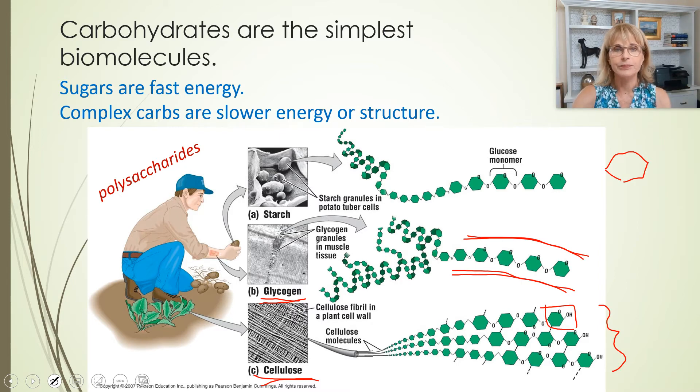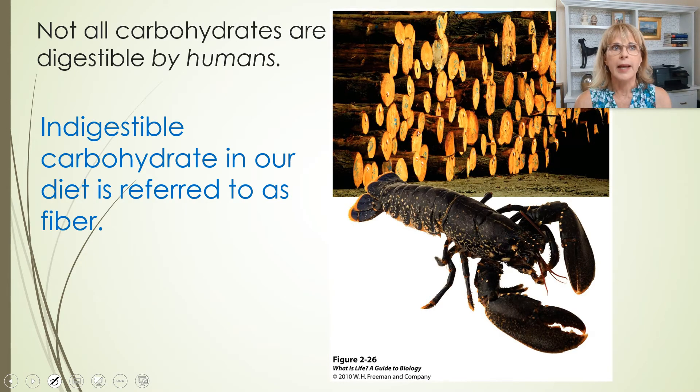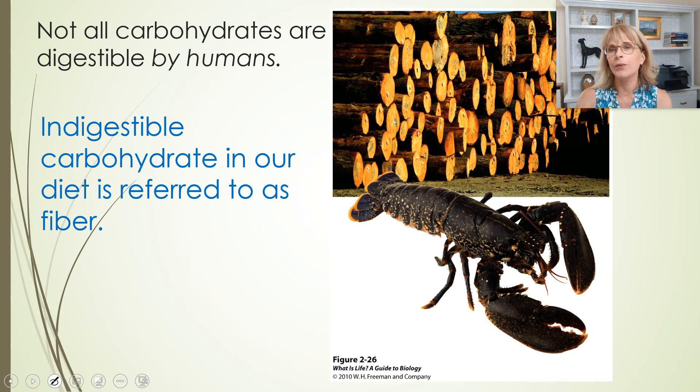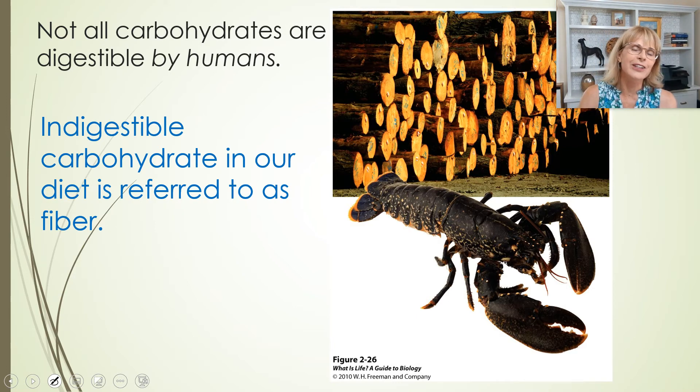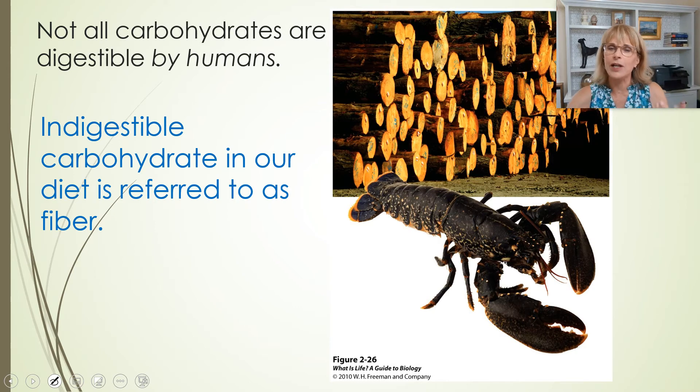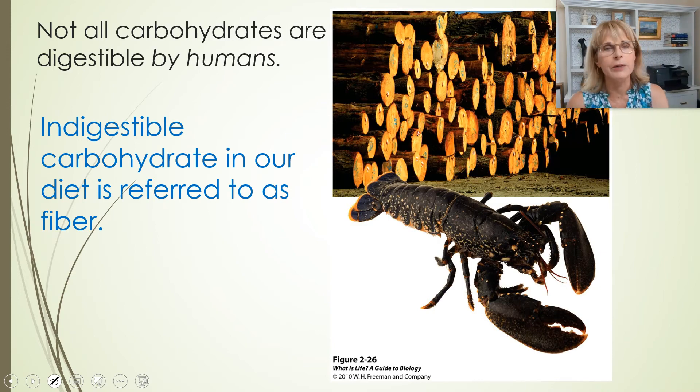So for humans, all of the complex carbohydrates that we consume in our food that we cannot digest, we call that fiber. Yeah, not all carbohydrates are digestible by humans. So wood, if you're writing on paper, you're writing on carbohydrate. That's weird, right? But if you ate it, you could not get calories from it. Also, the exoskeleton of insects and crabs and lobsters is also complex carbohydrate. But again, we can't get any calories from that.